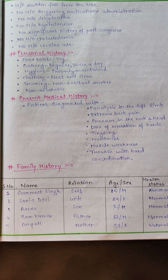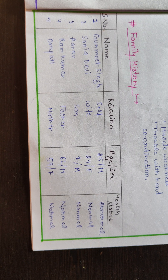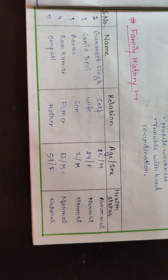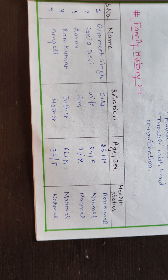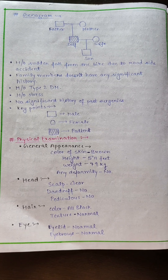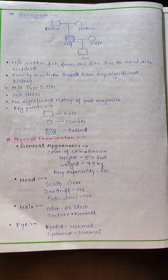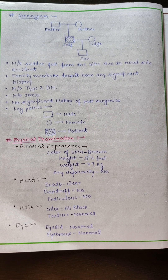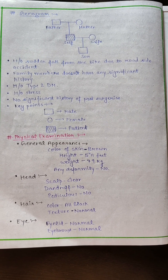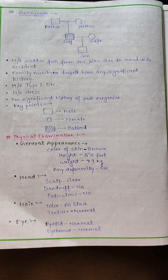In the family history, we write about the patient's family members, their relation to the patient, age, sex, and health status — whether abnormal or normal. We also draw a genogram including the patient's father, mother, self, and if married, his wife and children. In the history of diagnosis, the patient had a sudden fall from the bike due to a roadside accident, a history of type 2 DM, history of stress, and the family members don't have any significant history.